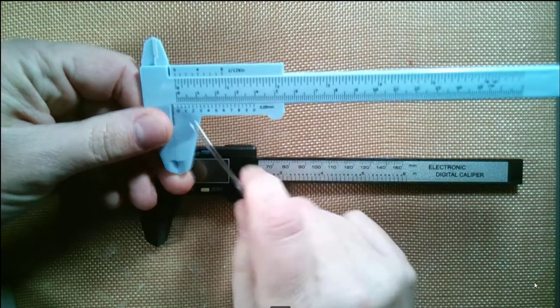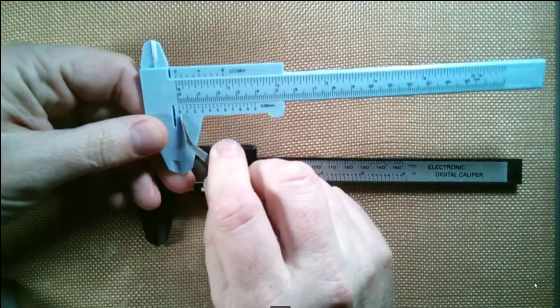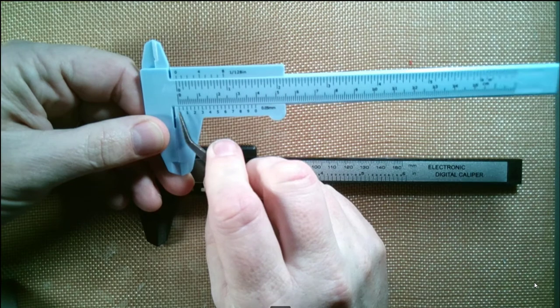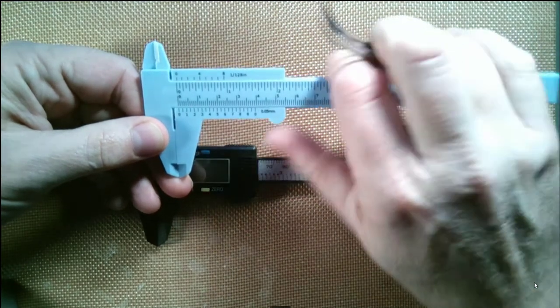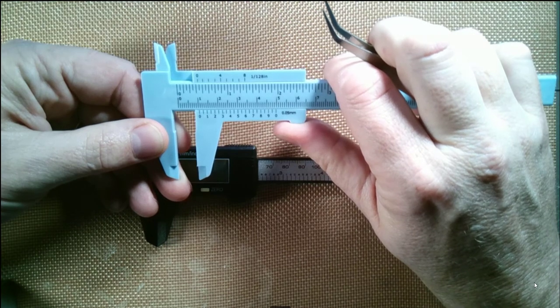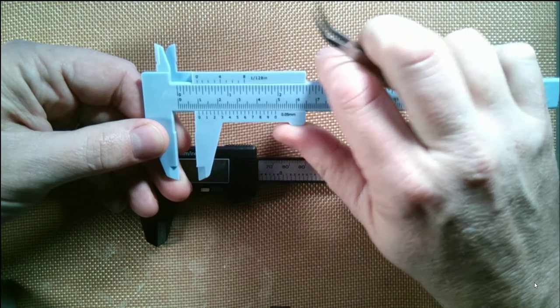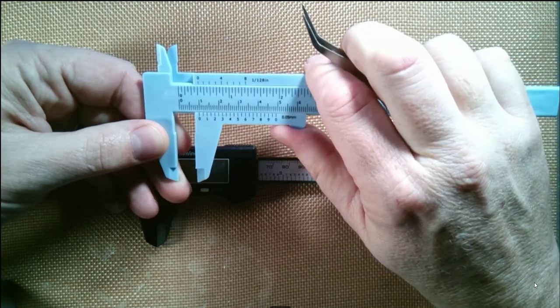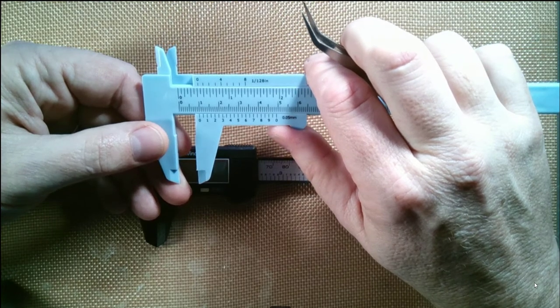...is this vernier scale. Your main measurement is going to be where the zero is. So if I had something that was 10 millimeters, it would come up right here. This is divided into centimeters first, and there's 10 millimeters in every centimeter. If something is exactly 10 millimeters, you'll see this lines up perfectly with the mark.